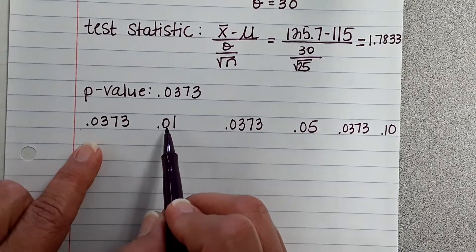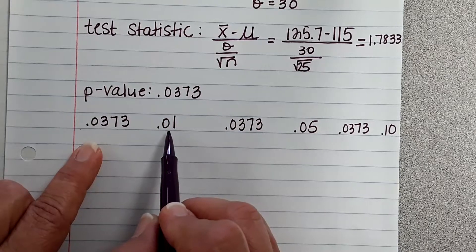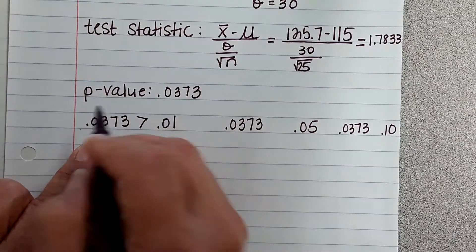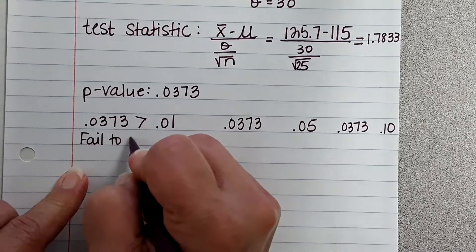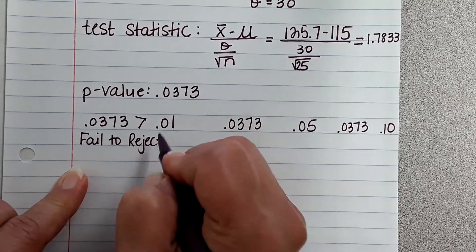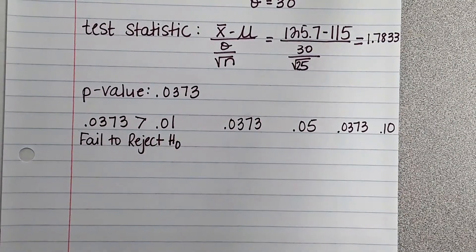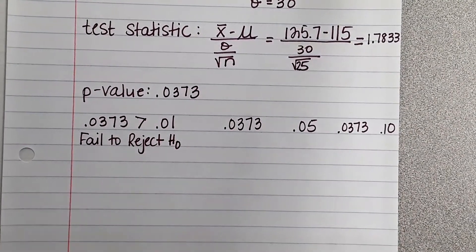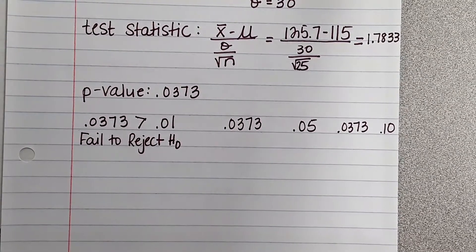Greater. Then that means we would here, we would fail to reject. So if we were doing this test and we said our alpha level is going to be 1%, then we would fail to reject. At that level, the information that we got is not significant enough.